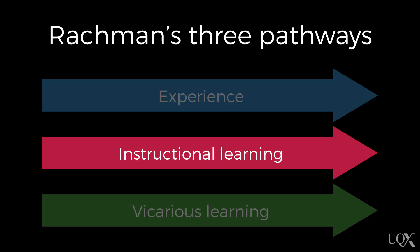The second pathway is instructional learning, which involves the transmission of information relating to danger. For example, when a parent repeatedly warns a child to stay away from pools because people drown in pools all the time, the child might develop a fear of pools.